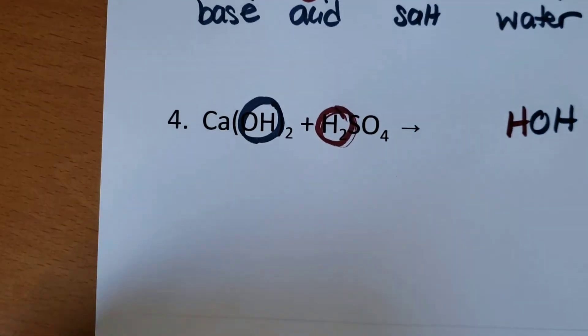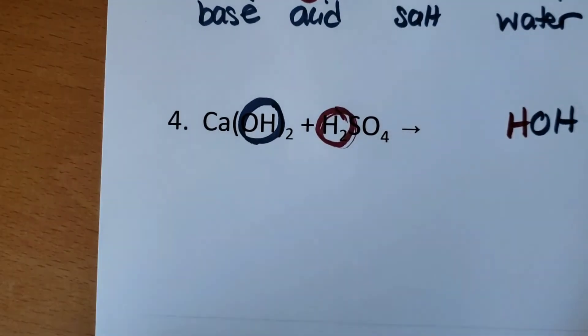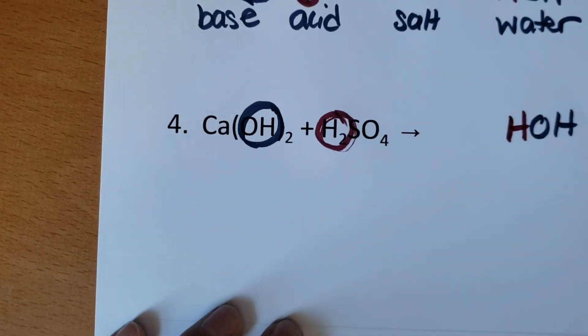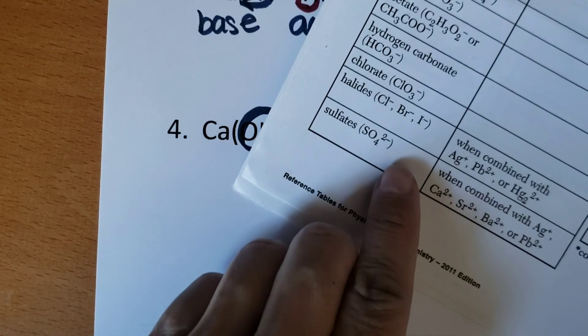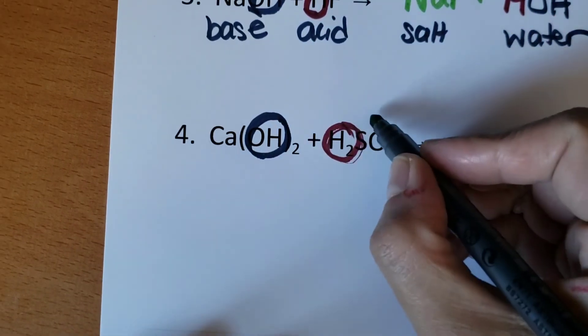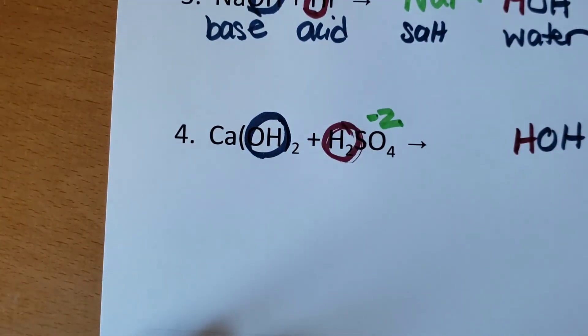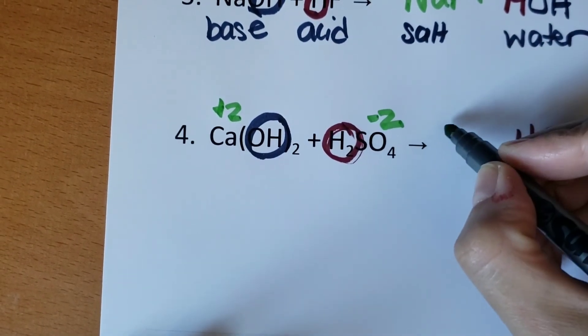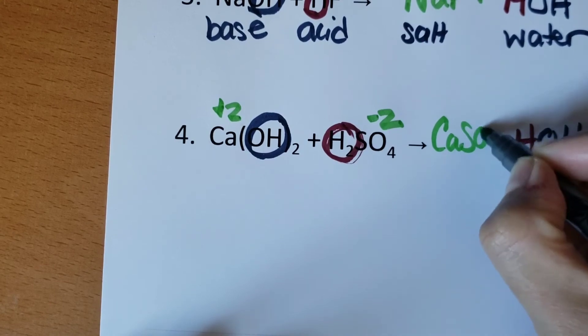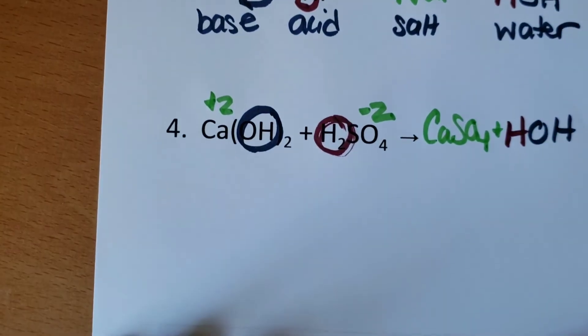And then we're just going to bring together what's left over. We have to look at the charges. So my reference table tells me that that sulfate has a minus two charge and calcium element number 20 is a plus two. So they're equal yet opposite. So we're just going to push them together. They already have a neutral compound.